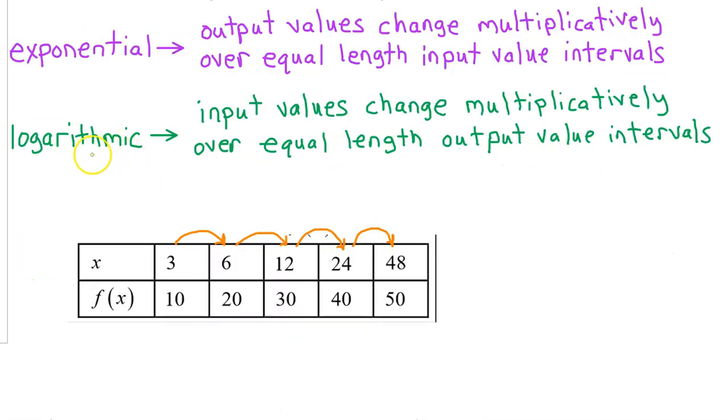Finally, we have learned that a logarithmic model is best if the input values change multiplicatively over equal length output value intervals. Notice that this is the reverse of what we said for exponential. Each input value is 2 times the previous input value, so the input values do change multiplicatively. At the same time, the output values are increasing by 10, so we do have equal length output value intervals.